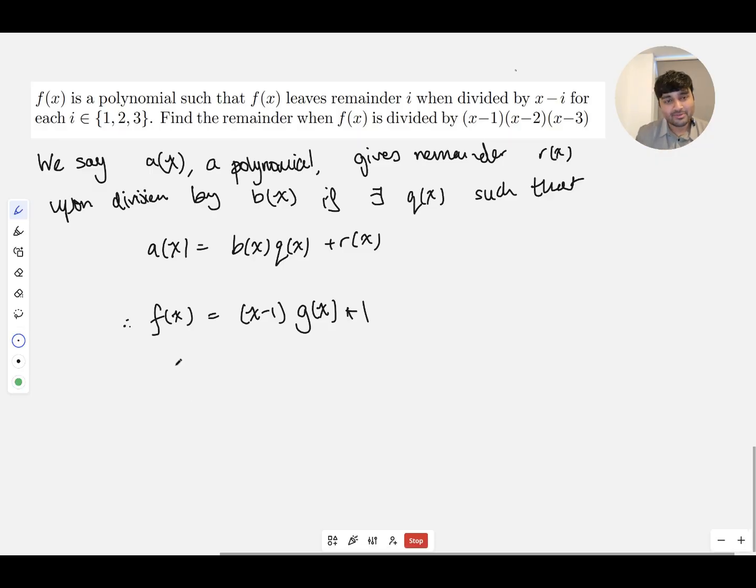Or we actually do know some stuff about g. The way we're going to do that is by looking at what happens when x is 2. When x is 2, we get that f of 2 is (2 minus 1), which is 1, times g of 2 plus 1. And we're told that that's 2. And so that tells us that g of 2 equals 1. And so in particular, g of 2 minus 1 is 0.